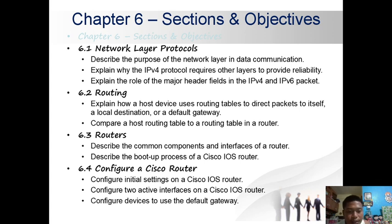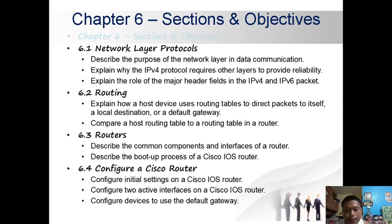Explain the role of the major header fields in the IPv4 and IPv6 packet. Section 6.2 Routing: explain how a host device uses routing tables to direct packets to itself, a local destination, or a default gateway.